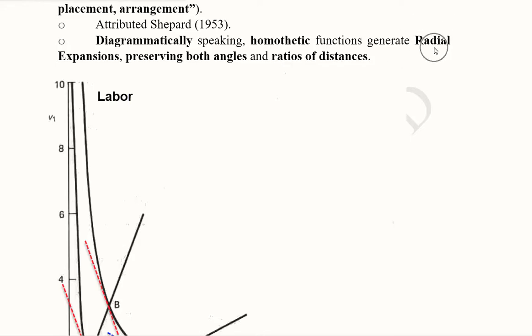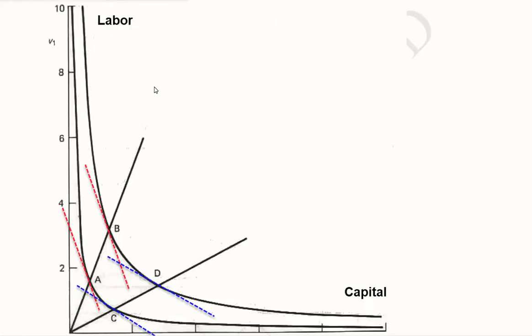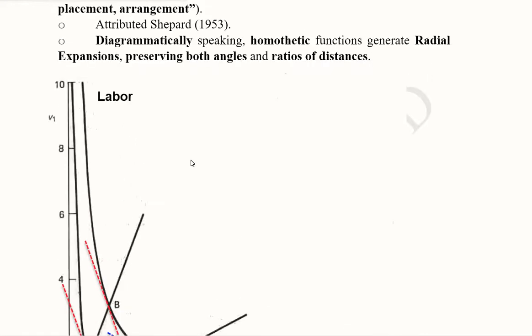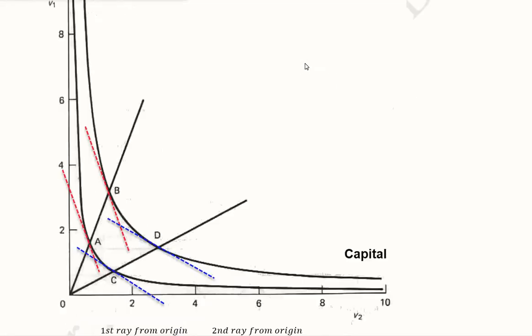It is basically a kind of radial expansion in which the same kinds of curves are repeated. As you can see, this is one curve and this is the second curve. They are repeated in this radial fashion. In addition to this radial expansion, the angles remain the same and the ratio of the distances also remains the same.